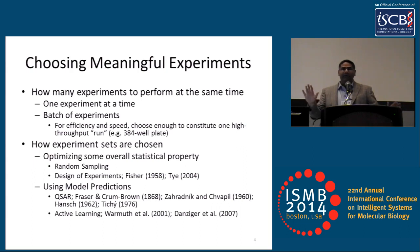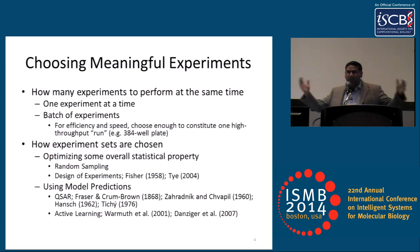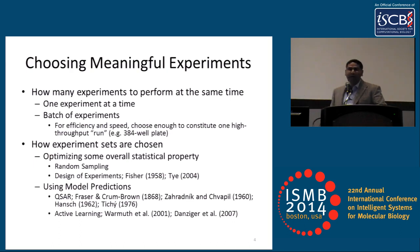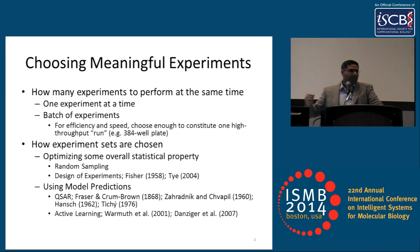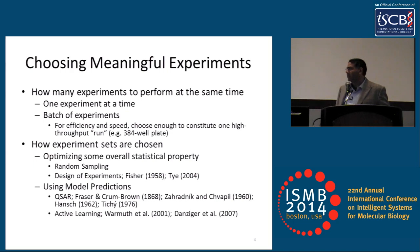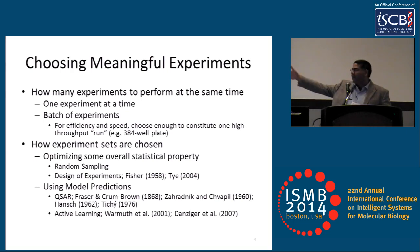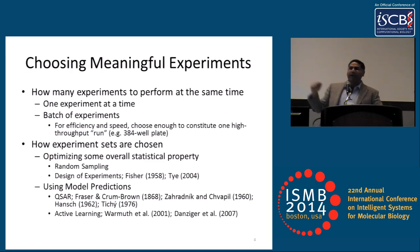Again, we have a dichotomy. We can either try and optimize some global property of the data we will collect, such as for random sampling, or we can attempt to make use of model predictions as we progress through. We collect some data, and with predictions of a model of these, we can attempt to choose the next experiments. These fall largely into two kinds of categories: methods like quantitative structure-activity relationships and active learning paradigms.